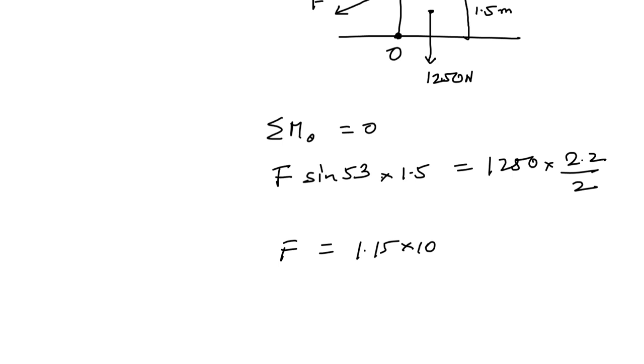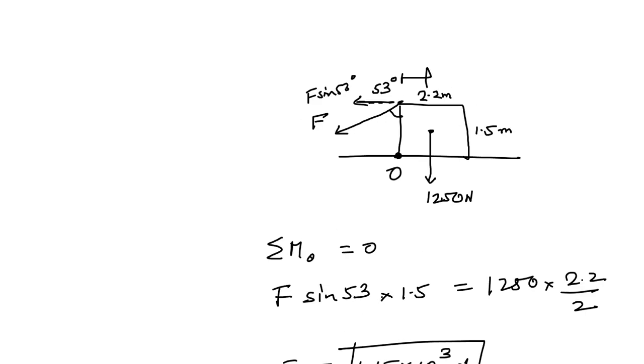Now, how hard does the floor push upward on the crate? This is simple: you have the vertical component of this force, which is F cos 53°, and the weight acting downward.